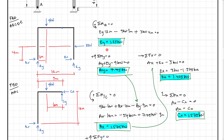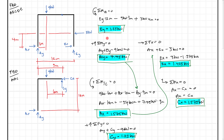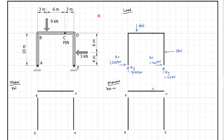Here are those forces we came up with. We found the reactions at AY, EY, CY, and CX. We're going to draw more diagrams on another page for the shear and moment. The diagrams I drew look like this — where we have the loads. I transferred all the loads from that previous problem up here: AX, AY, EX, EY, and our given applied loads. Now we want to go ahead and draw the shear and moment diagrams.